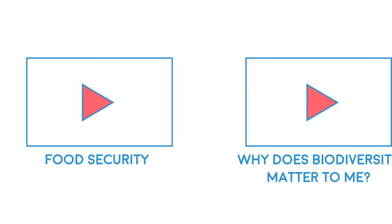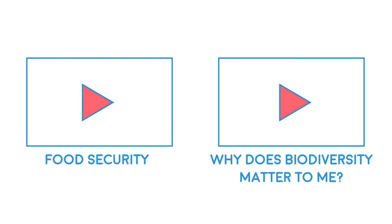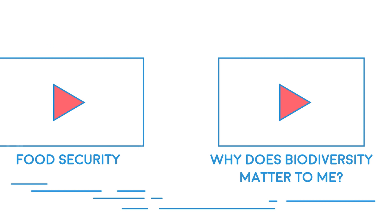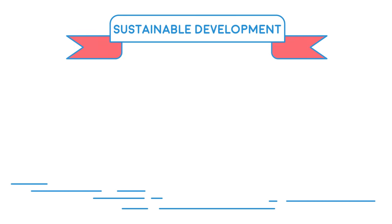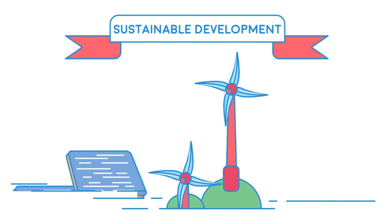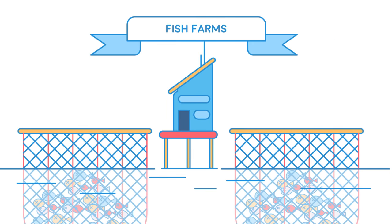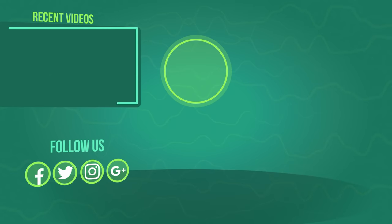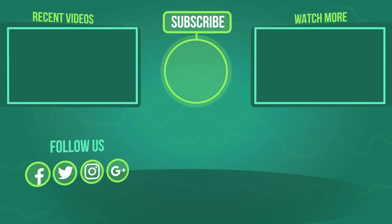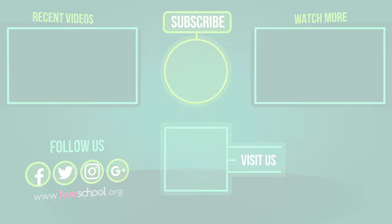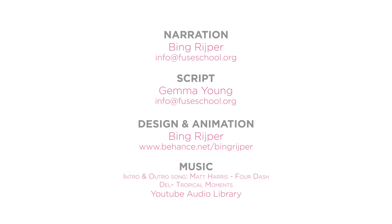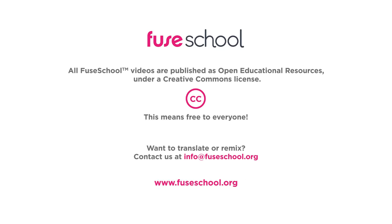In other videos we will look at food security and biodiversity in more detail. So in this video we have covered what sustainable development is and some examples, including how to solve the problem of overfishing. If you liked the video, give it a thumbs up and don't forget to subscribe. Comment below if you have any questions, and why not check out our Fuse School app as well.